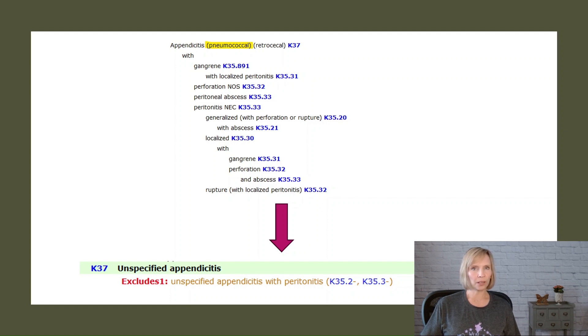Even though the code title itself doesn't mention pneumococcal, because of the non-essential modifier, we know that pneumococcal appendicitis is included in code K37, unspecified appendicitis.